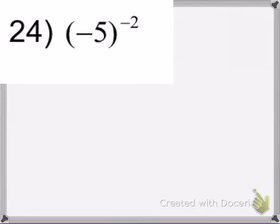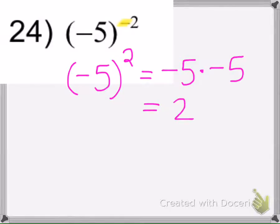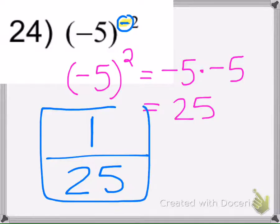Here we have negative 5 to the negative 2nd power. I'm going to ignore the negative exponent and figure out what it equals without it. So it would be negative 5 times negative 5, which is 25. But because it had this negative exponent, that 25 goes to the denominator. And if I have a denominator, I need a numerator, so the answer is 1 over 25.